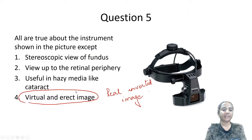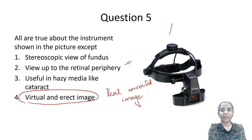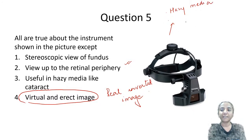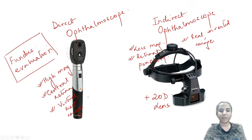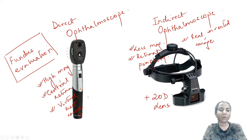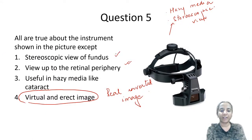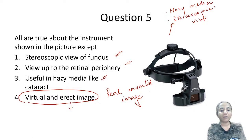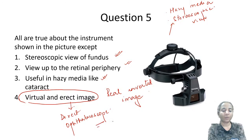The indirect ophthalmoscope is useful in hazy media such as cataract, and it gives a stereoscopic view with good depth perception. The direct ophthalmoscope is not useful in hazy media and gives a non-stereoscopic view. So for the question, 'gives a virtual and erect image' is incorrect for the indirect ophthalmoscope — that applies to the direct ophthalmoscope.